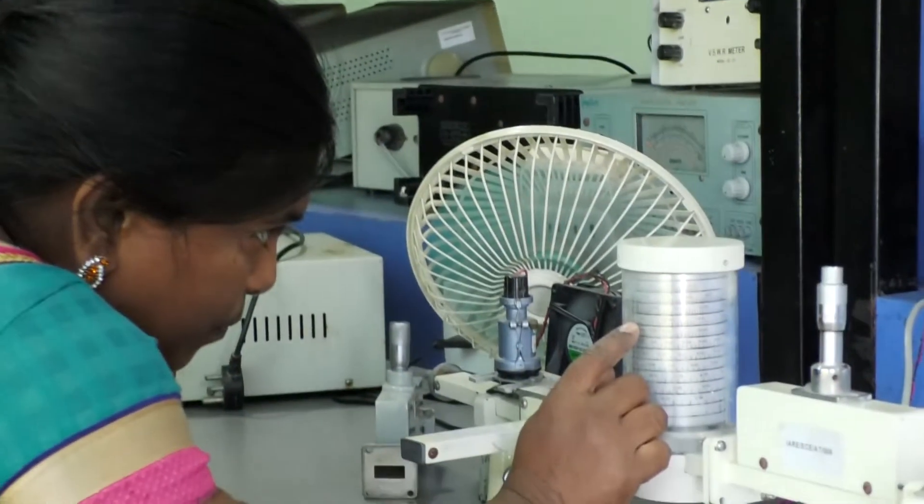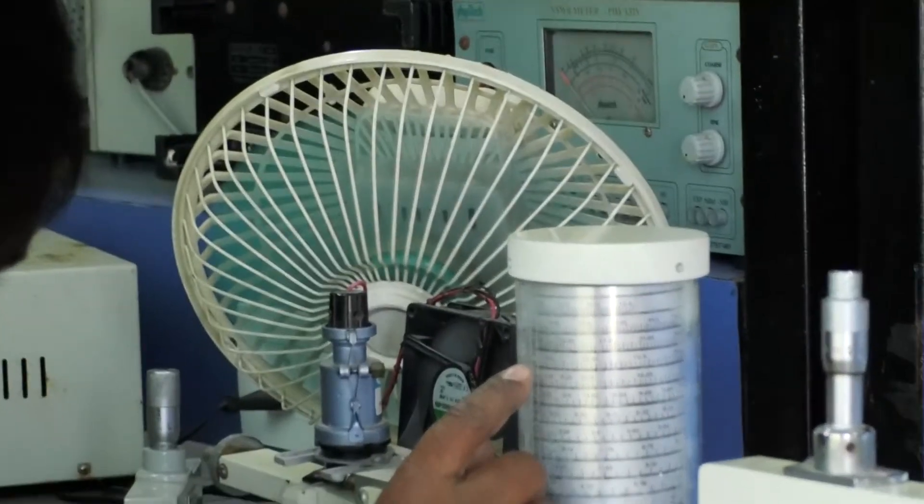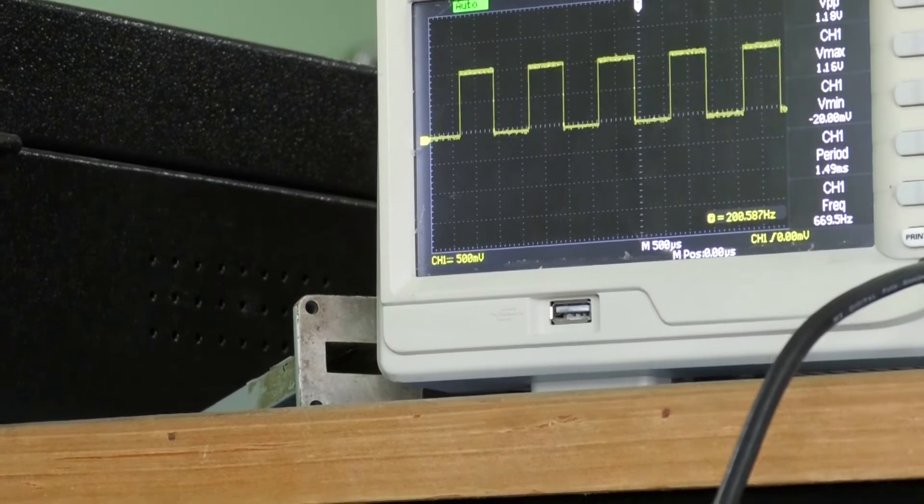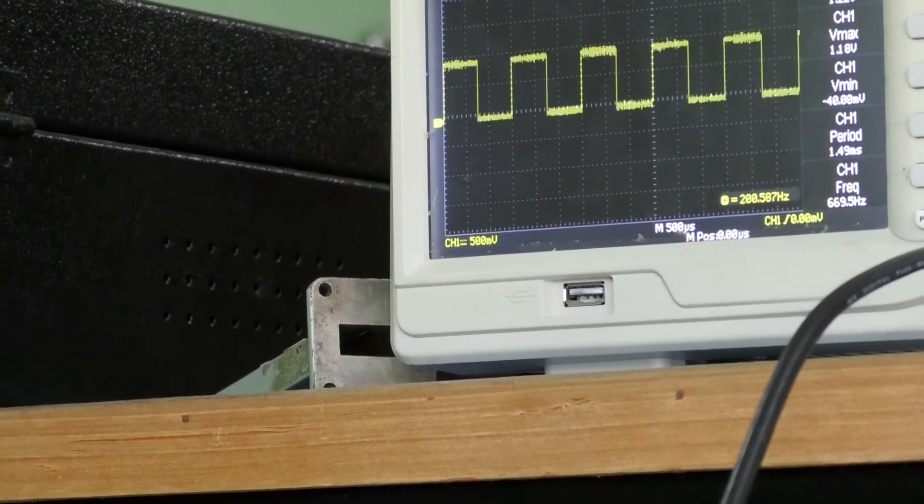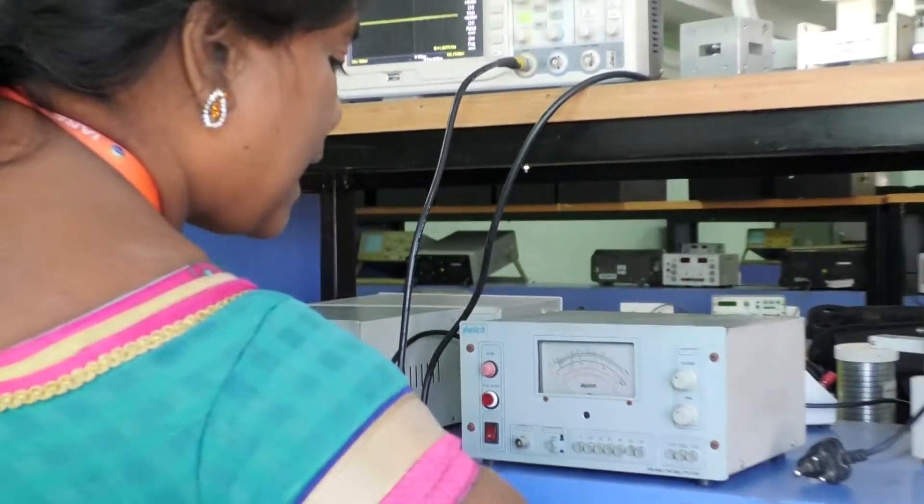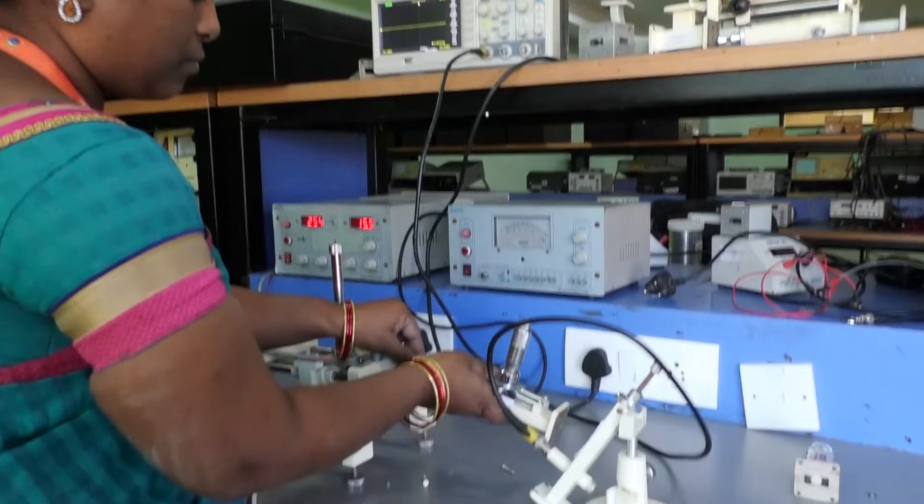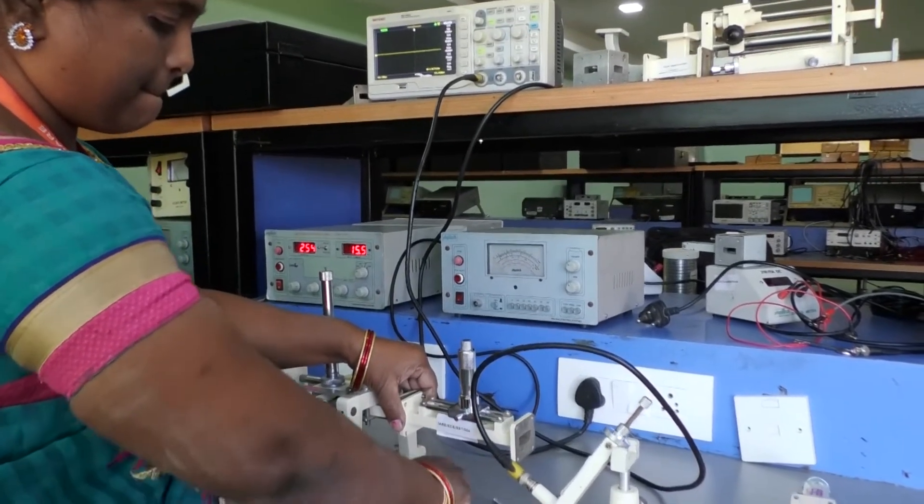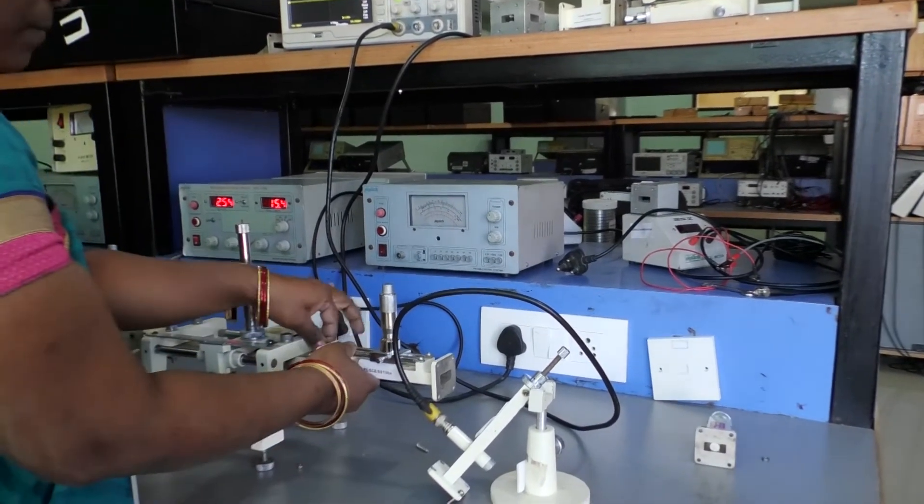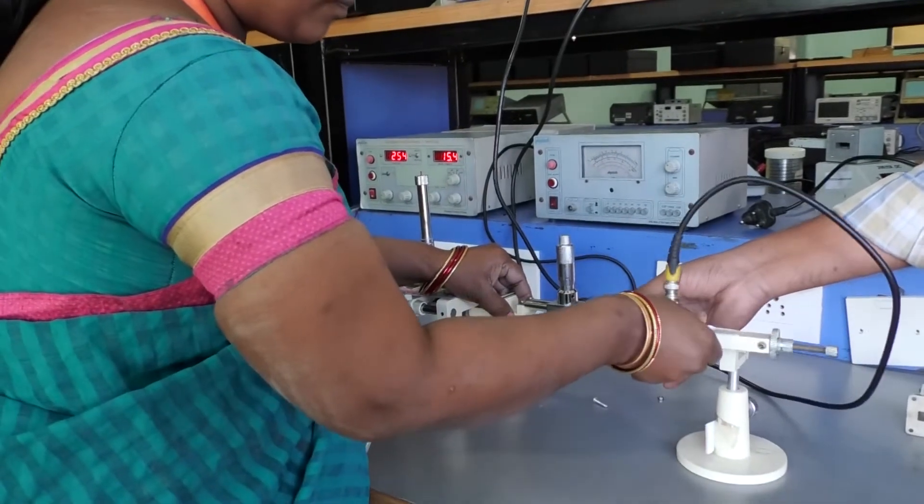Now the frequency of the microwave is 10.39 gigahertz. After measuring the frequency, keep the frequency knob as it is. Now in between slotted line section and diode detector place the SS tuner.